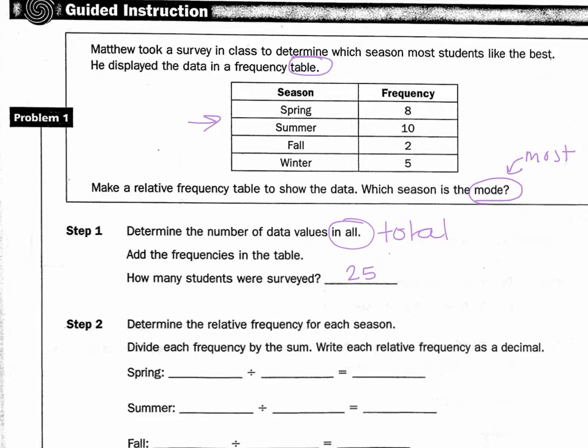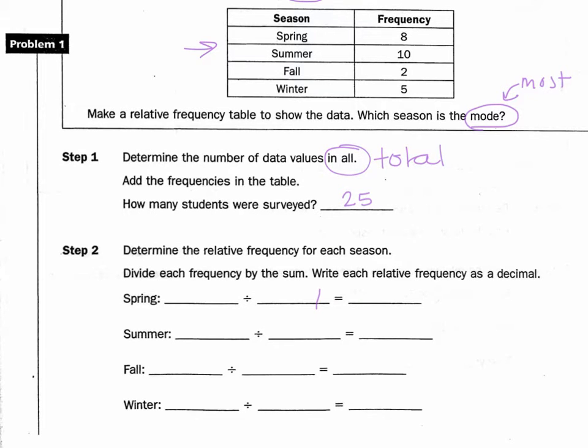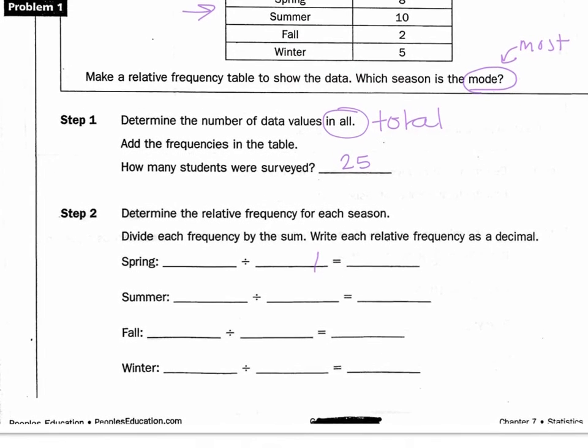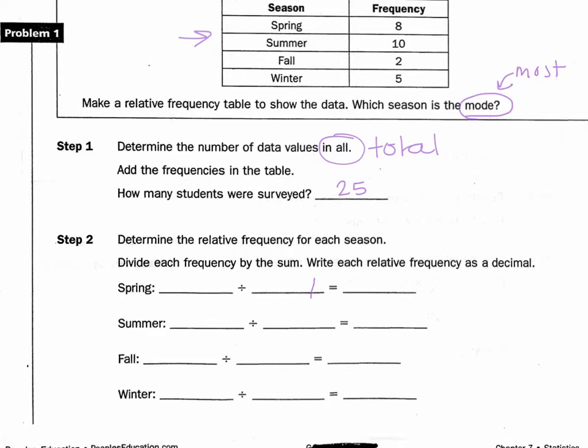Now we need to determine the relative frequency for each season. So what we're going to be doing here is some division. I'm going to be taking the number of the frequency and dividing it by the sum, which is 25. So here is 10 divided by 25, 2 divided by 25, and 5 divided by 25. Don't hate me, but I want you to pause it, do the math, and then check your answers because you should get a decimal number.